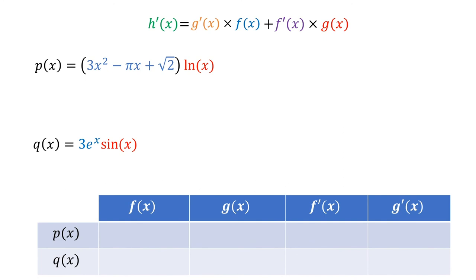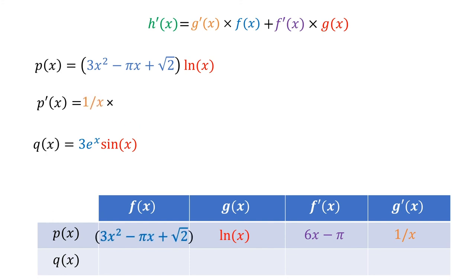First, for p, we know that the two functions being multiplied are 3x squared minus pi x plus root 2 and the natural log of x. Then we need to figure out their derivatives, which are 6x minus pi and 1 over x. Next, we put these together following the product rule. We multiply g prime, which is 1 over x, by f, which is 3x squared minus pi x plus root 2. Then we add to that f prime, which is 6x minus pi, multiplied by g, which is the natural log of x.